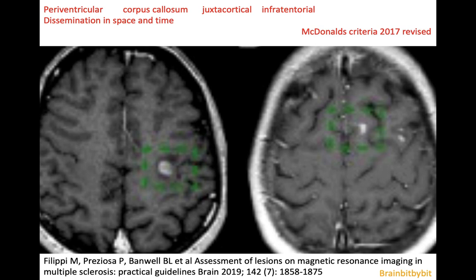To make a diagnosis of multiple sclerosis you need not only lesions in periventricular, corpus callosum, juxtacortical, and infratentorial locations, but you also need to demonstrate dissemination in space and time. To demonstrate dissemination in time you can administer gadolinium. In MS the active lesions enhance — sometimes nodular, sometimes as an open ring enhancement where the ring is open towards the cortex, so the enhancing part is towards the white matter, representing the front of demyelination.